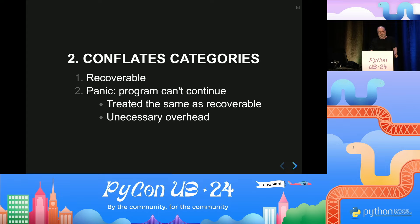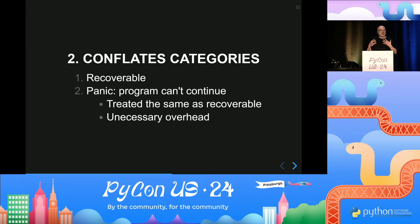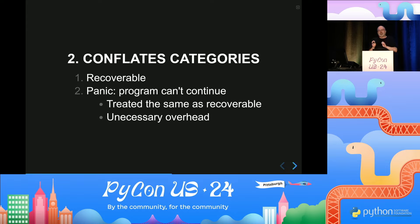Another problem is that exceptions conflate the categories of errors. We have errors you might be able to recover from — for example, you ask a database for information and don't get an answer, so maybe if you try again in a second you'll get one. But then there's a vast number of errors that are simply called panics — there's no way to recover from these; you just have to record the problem and bail out of the program. Exceptions treat both of these things as the same, which doesn't make much sense once you realize they are two different types of things.